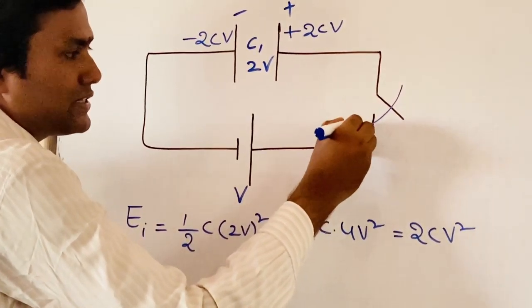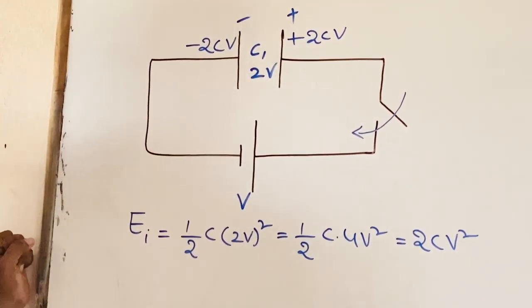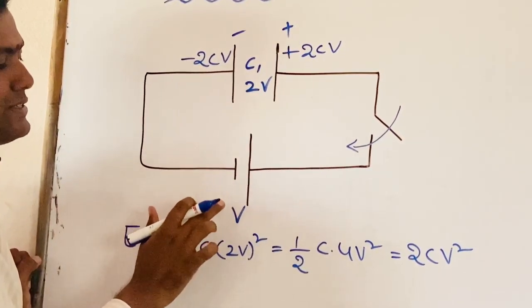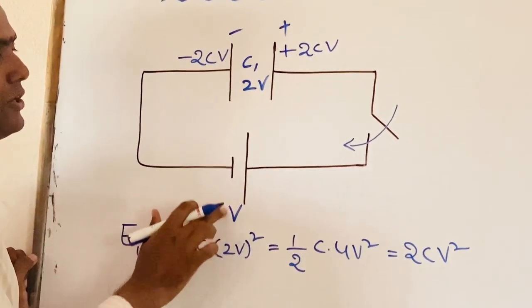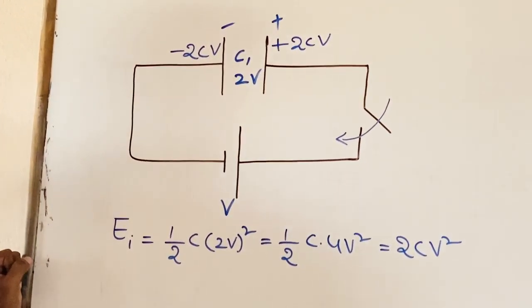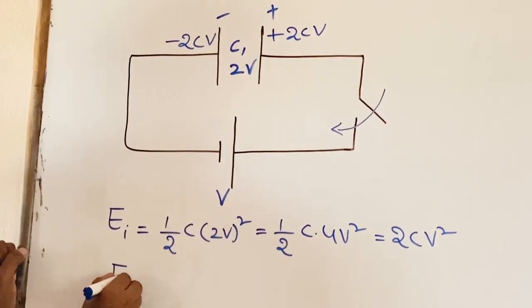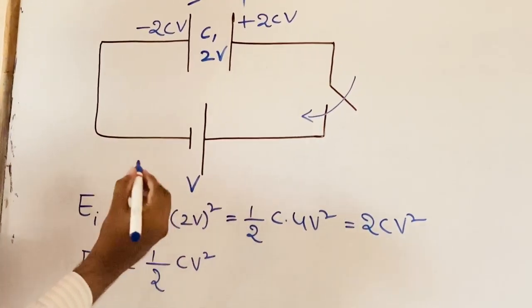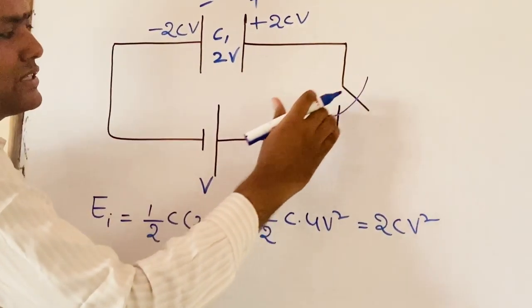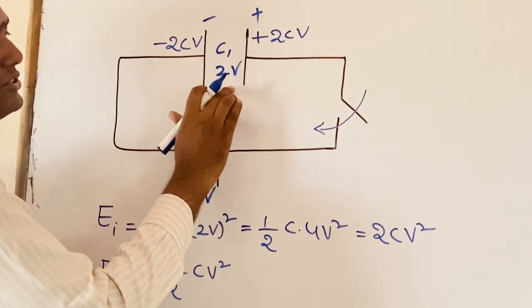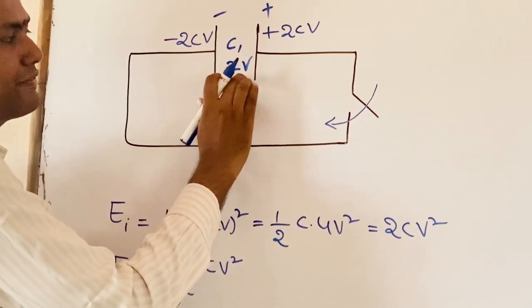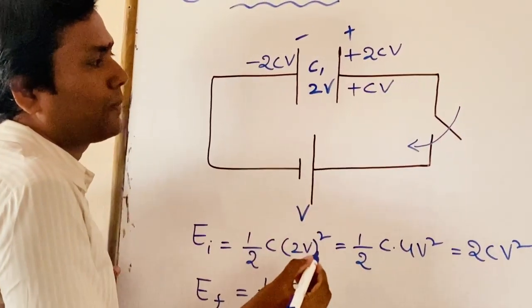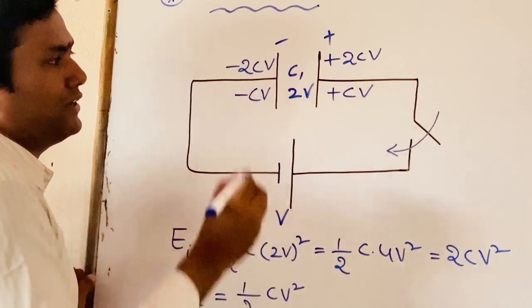2CV² is the total energy stored before closing the switch. Now, after closing the switch, the potential difference across the capacitor equals the battery potential. So the final energy EF = ½CV². After closing the switch, the charge on the positive plate becomes plus CV and on the negative plate minus CV.